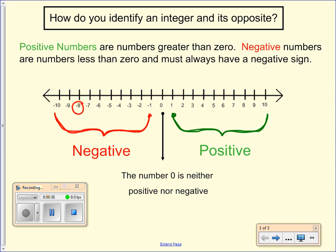For instance, negative eight is negative because it's to the left of zero and it also has the sign in front of the number. The number zero is neither positive nor negative.